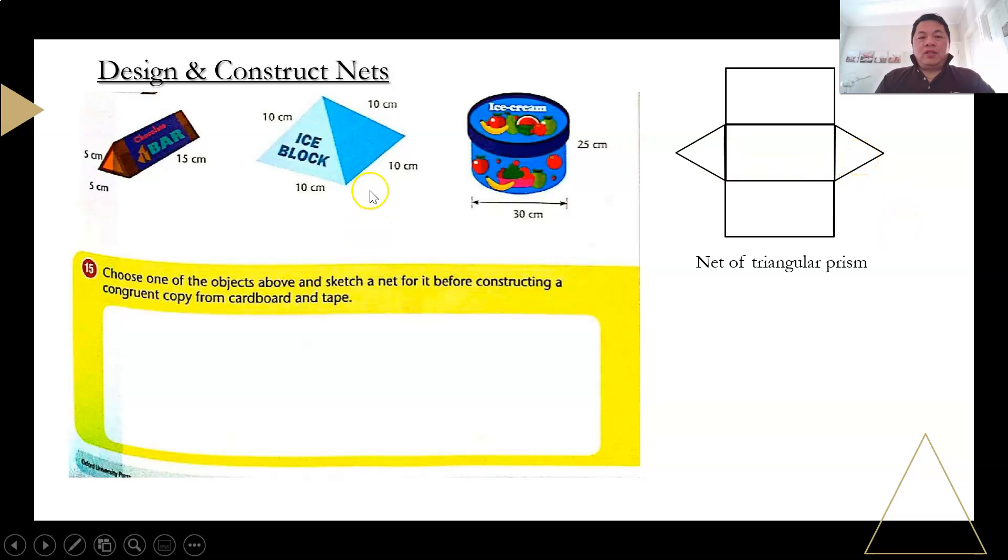So the other one is a square pyramid. Net of a square pyramid. So it looks something like this. You have a square. The triangle doesn't really look like an equilateral triangle. So I have just drawn an isosceles triangle. And these four isosceles triangles are similar. They are the same. Should I say they're congruent. They're congruent.